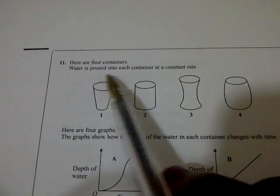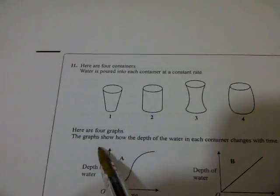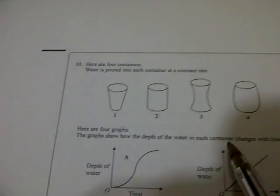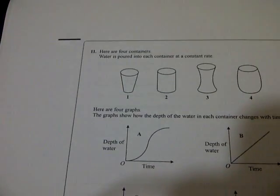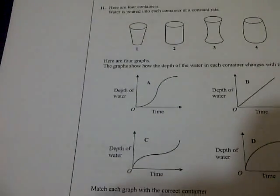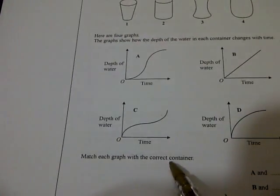Question number 11 says: here are four containers, water is poured into each container at a constant rate. Here are four graphs. The graphs show how the depth of the water in each container changes with time. It shows the depth of water with time. Match each graph with the correct container.